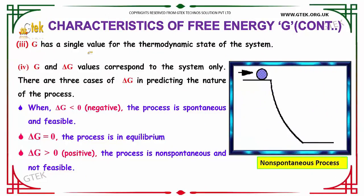G has a single value for the thermodynamic state of the system. G and delta G values correspond to the system only. So these are the points to be noted and are considered as the characteristics of free energy.